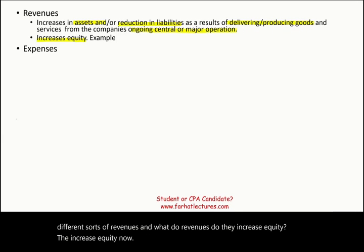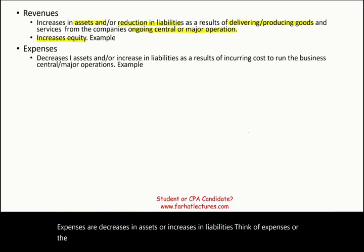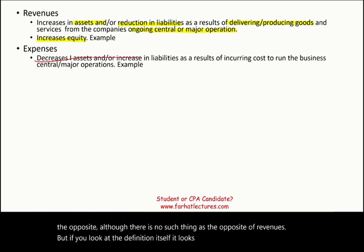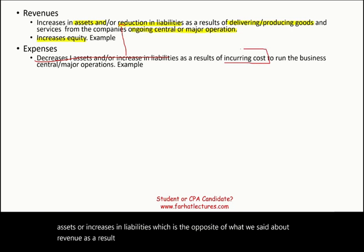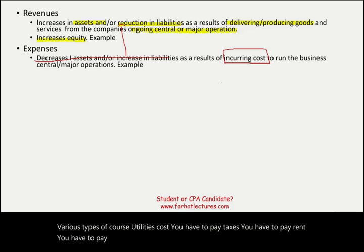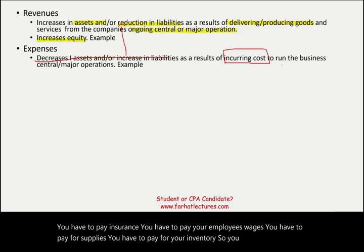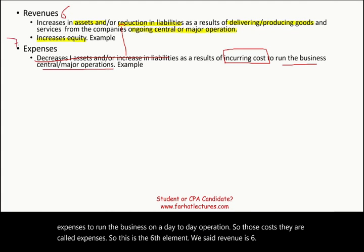Expenses are decreases in assets or increases in liabilities as a result of incurring costs. To run a business, you have to incur various types of costs: utilities, taxes, rent, insurance, employee wages, supplies, inventory. You have many expenses to run the business on a day-to-day basis. Those costs are called expenses — the sixth element is revenues and the seventh is expenses.